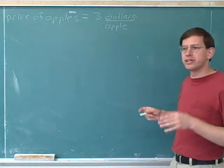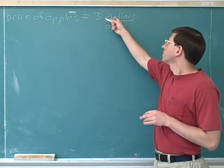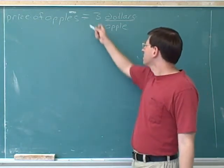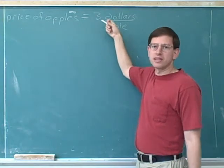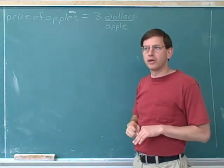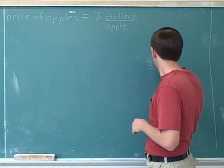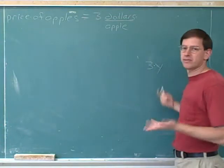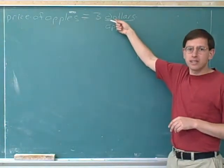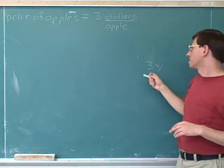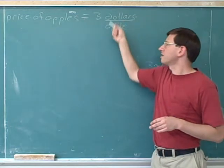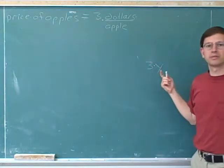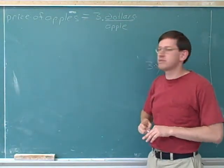The key is that we can treat units like variables. What's the relationship between the three and the units — are they being added, subtracted, multiplied, or divided? Well, if I wrote 3y, that means three times y. We're supposed to treat units as if they were just a variable. So when we say three dollars per apple, we really mean three times dollars per apple.